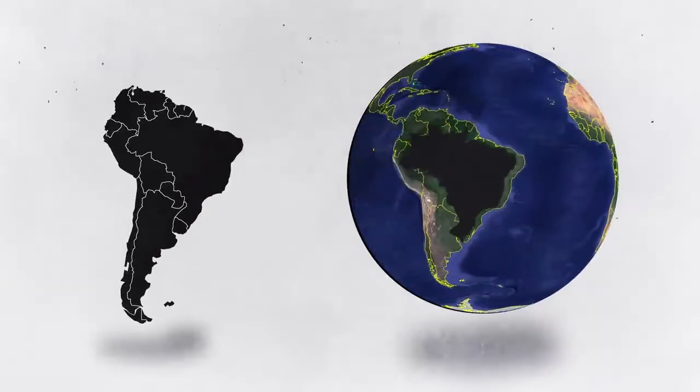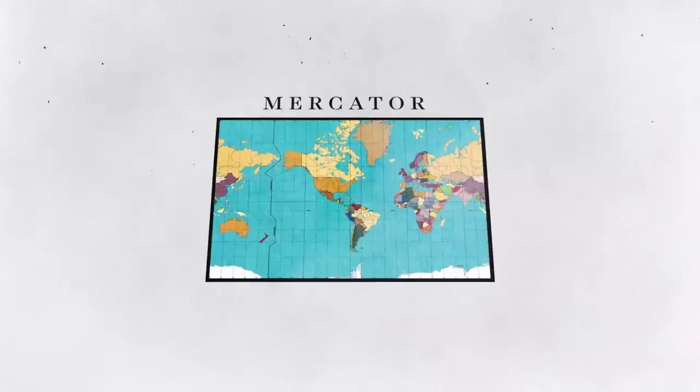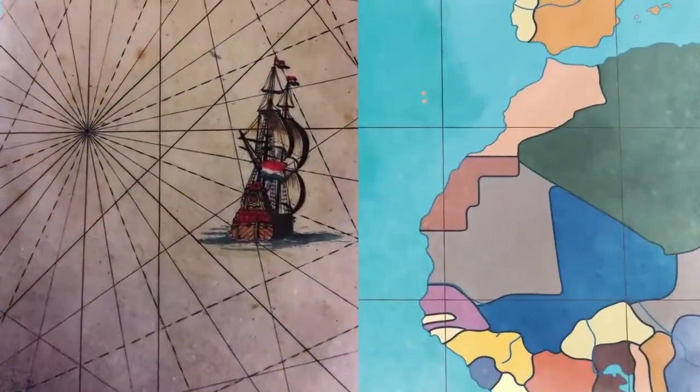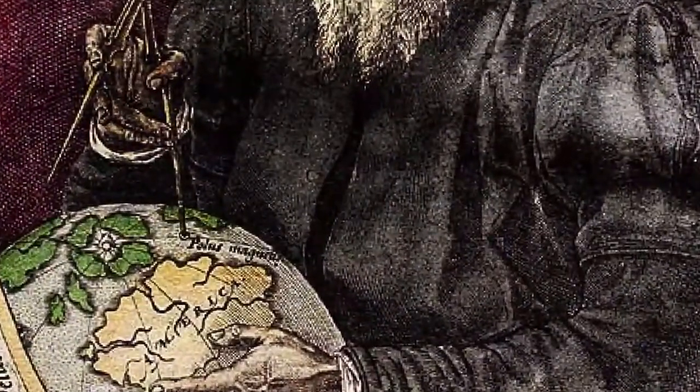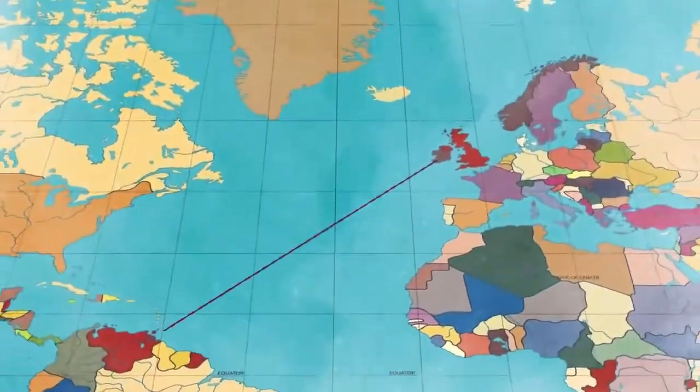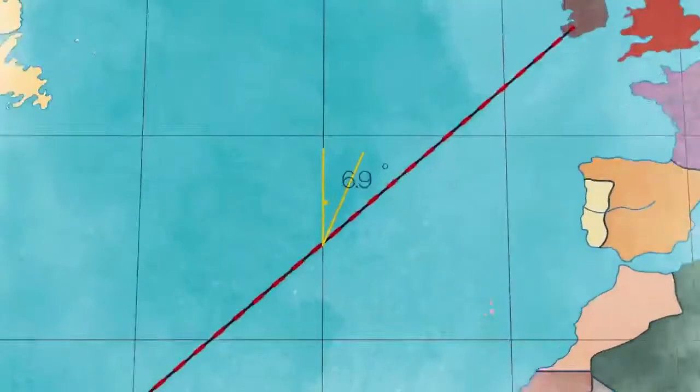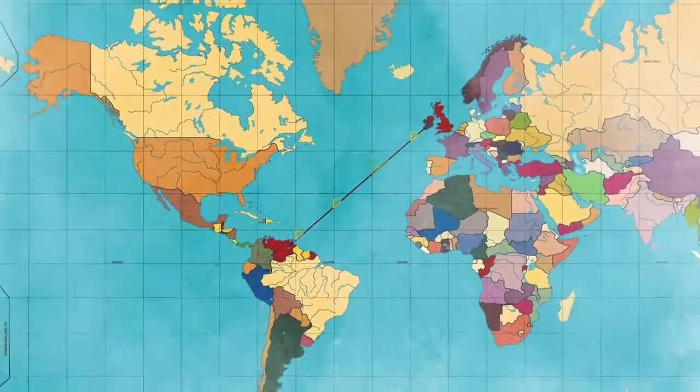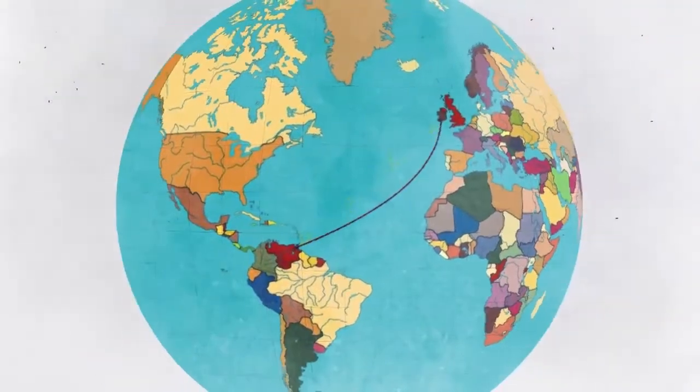But the original purpose of the Mercator projection was navigation. It preserves direction, which is a big deal if you're trying to navigate the ocean with only a compass. It was designed so that a line drawn between two points on the map would provide the exact angle to follow on a compass to travel between those two points. If we go back to the globe, you can see that this line is not the shortest route.